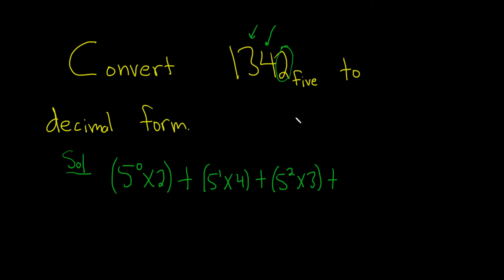And the last one would be 5 cubed times 1. There are other ways of writing it and other shortcuts you can take, but I always think this is a really simple approach because you start with this number here, raise it to the 0 power, multiply it by this digit, and then just increase the power.